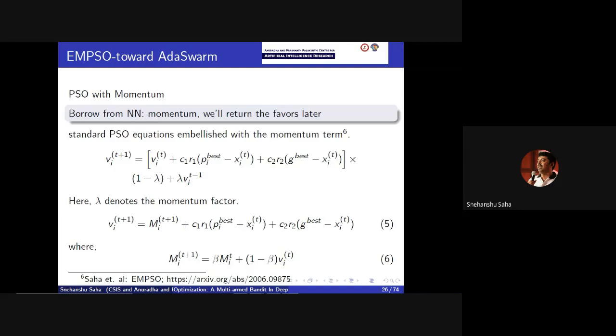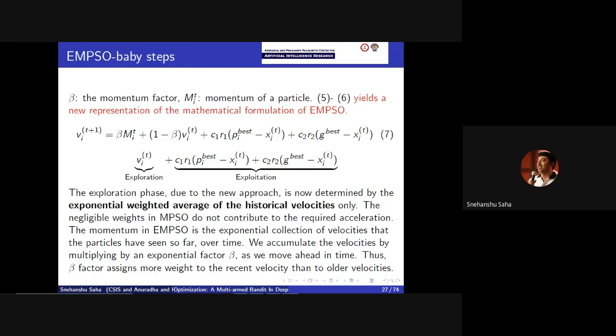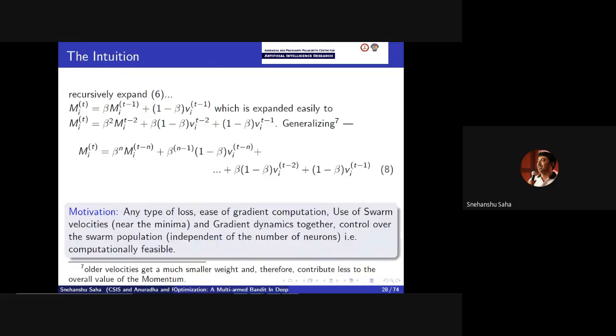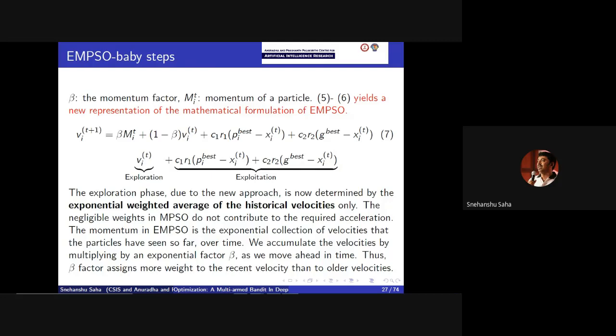In a typical swarm there is exploration and exploitation, and these are given equal importance in the exponentially averaged momentum particle swarm optimization (EMPSO) method. When we first proposed this method, neural networks were not in our minds at all - we just wanted to solve multi-objective optimization problems. But it turned out later, as we kept working, that this could be extrapolated to neural networks as well.